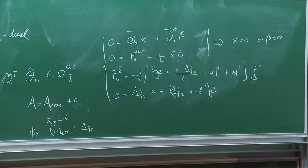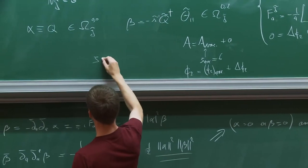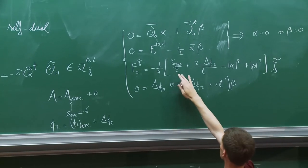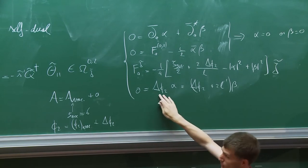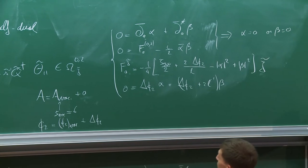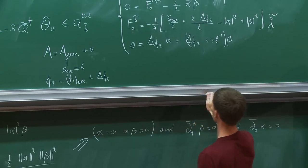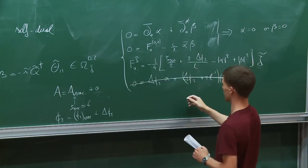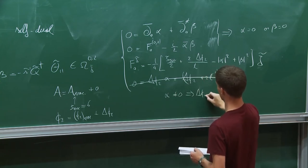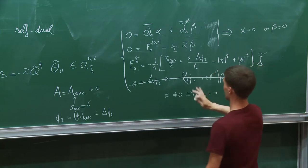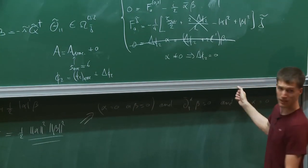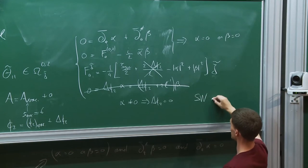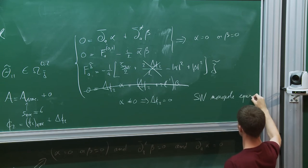Since we are considering the case where zeta is positive, we are giving a VEV to q rather than beta, so it must be alpha that gets a VEV. Since one of the two must be zero, it has to be beta. So we set delta Phi_2 equal to zero, and we are left with the remaining equations. You can recognize these as precisely the Seiberg-Witten monopole equations.